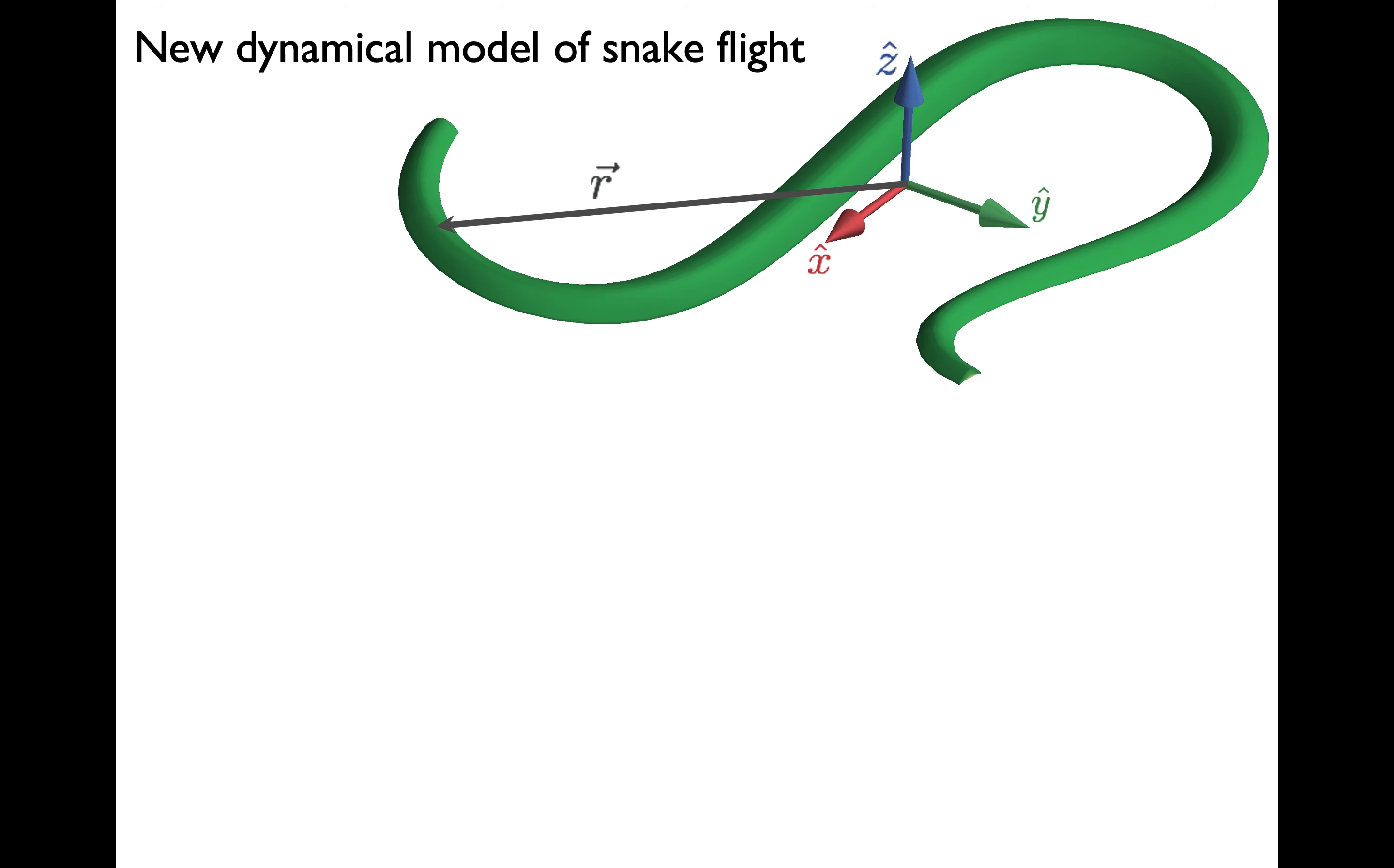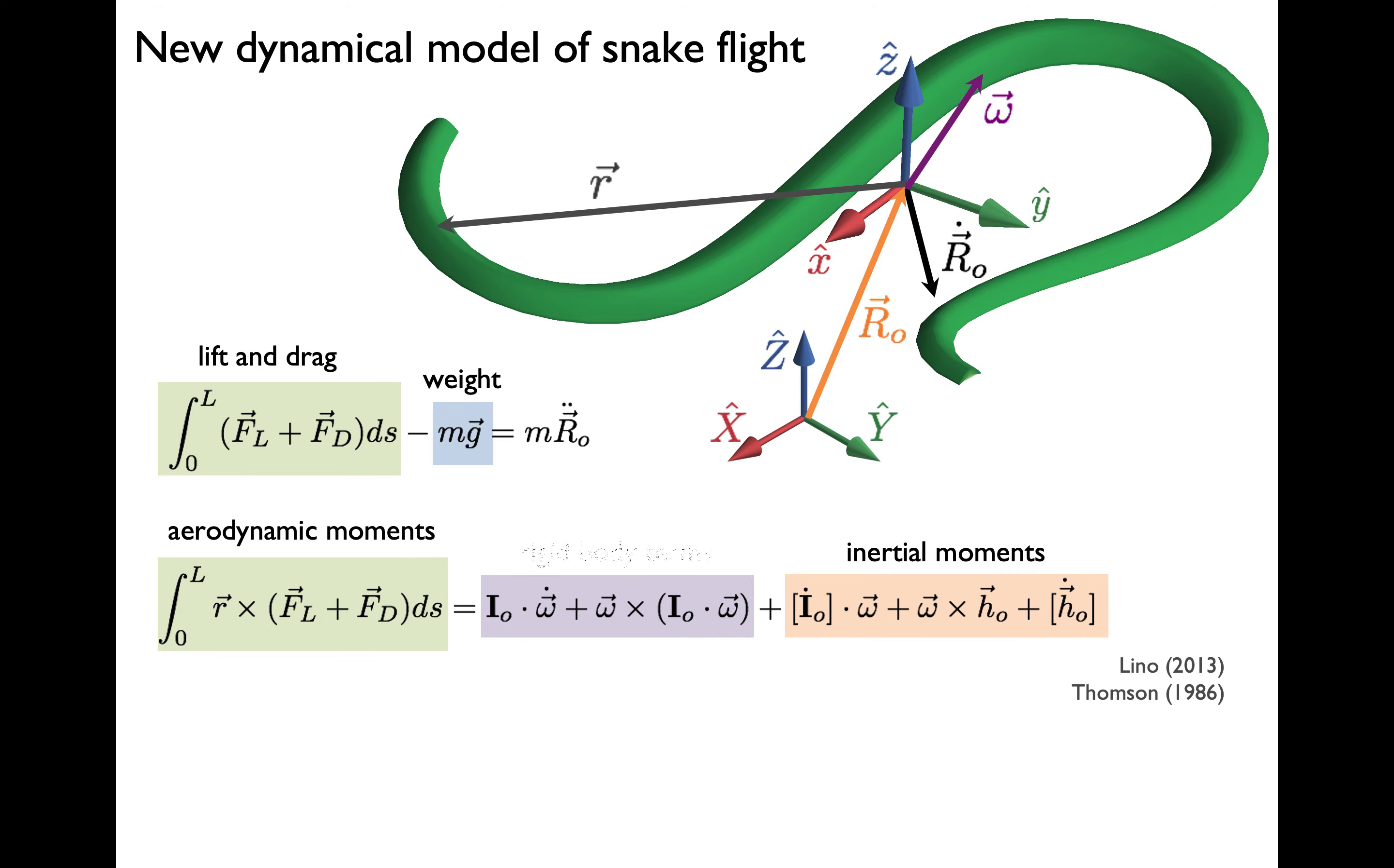Now we need dynamic equations of motion. For the translational equations of motion, it is simple enough. We have F equals MA, where our forces are lift, drag, and gravity. The rotational equations of motion are more complicated. But on the left-hand side, we have the aerodynamic moments due to the distributed lift and drag forces. And on the right-hand side, we have rigid body motion and also inertial moments. These are moments that affect the rotational motion simply due to the snake moving mass around.